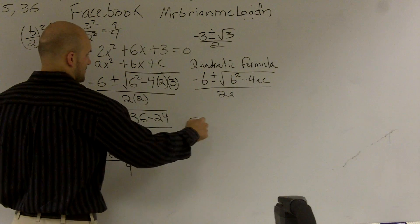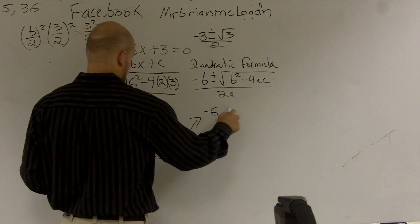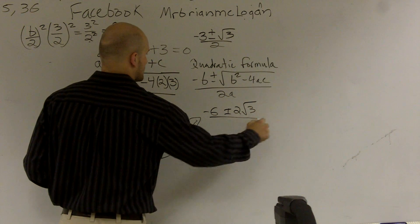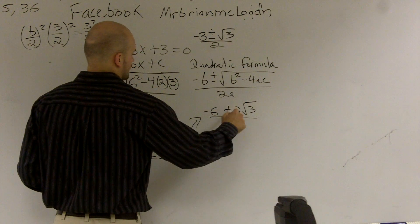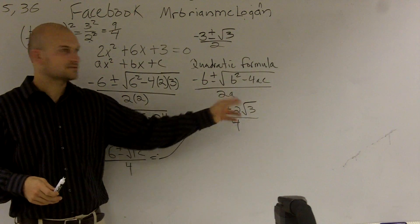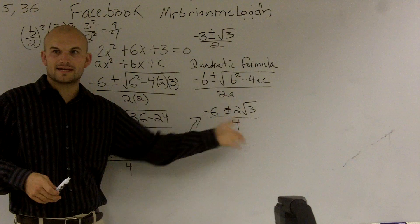Let's do our work over here. So I have negative 6 plus or minus 2 radical 3 over 4. Now, you guys notice I can factor out, or I can cancel out a 2, right?